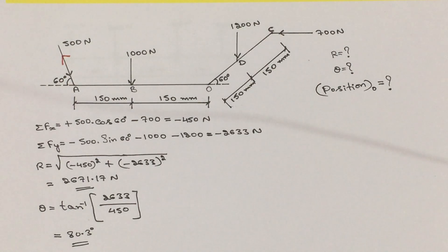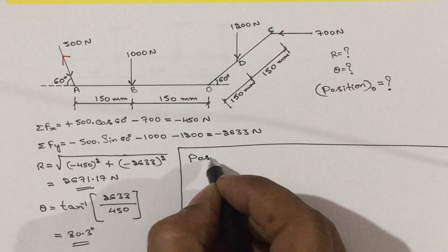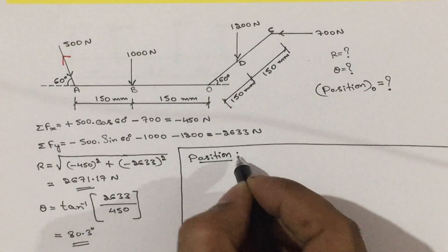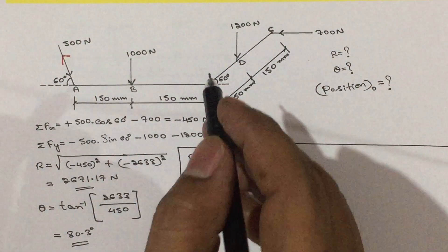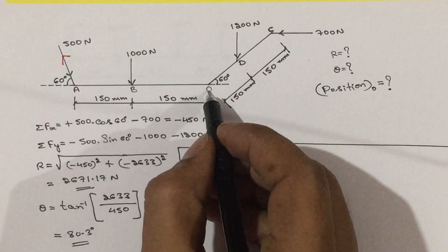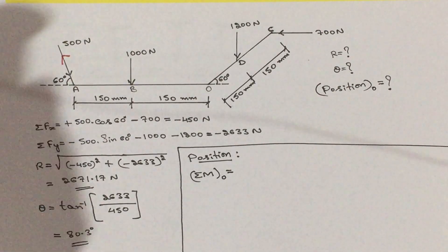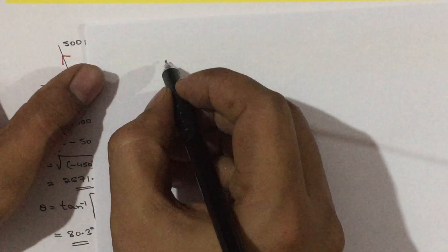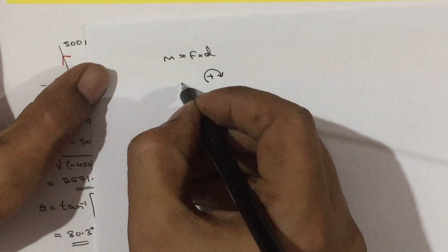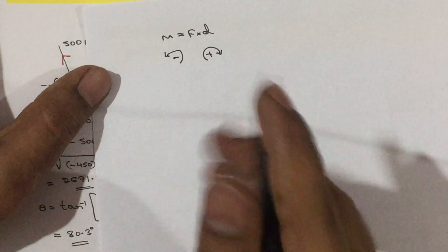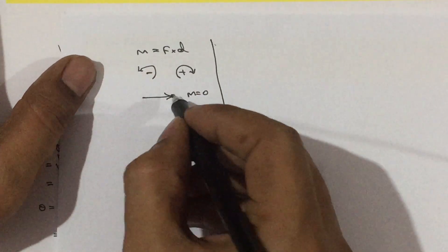Next we are left with the position of the resultant. To calculate the position, first we need to determine the sum of the moment with respect to the required point. Since no point is specified in the given problem, we will calculate with respect to point O. Remember: moment = force × perpendicular distance (F × d). If rotating clockwise, it is positive; if rotating anticlockwise, it is negative. If the force passes through the moment center, the moment is zero.